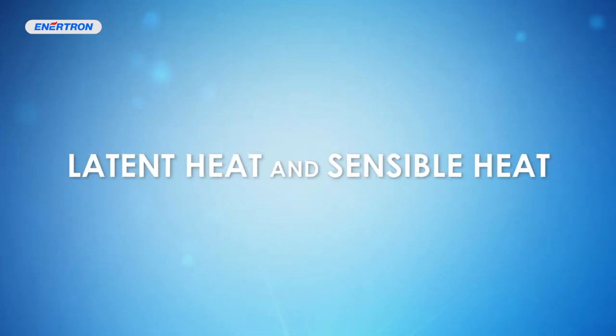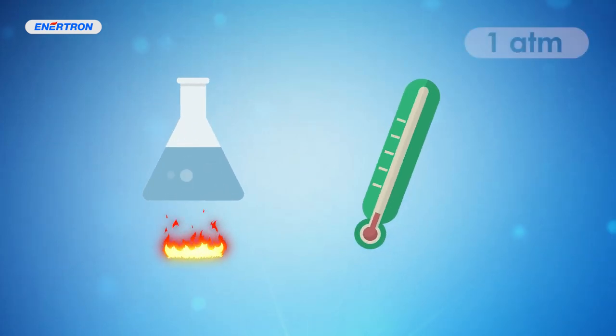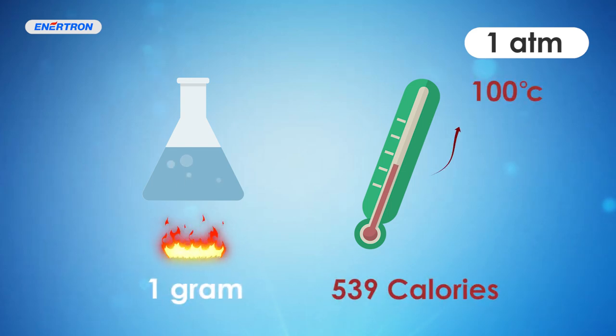Latent heat. Let us take a look at water as an example using latent heat. The latent heat of water is 539 calories per gram. Evaporating 1 gram of water into steam requires 539 calories of heat. Or, in reverse, condensing 1 gram of steam back into water requires rejecting 539 calories of heat.